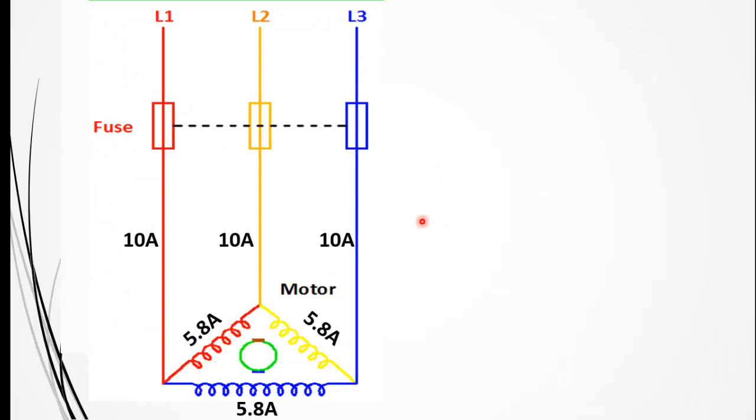First, I will explain what happens when single phasing occurs on a three-phase motor. Here you can see that during normal operation, all phases are carrying equal current. Since the motor is connected in the delta formation, the line currents are 10 amperes whereas the phase currents are 5.8 amperes. To see the relation between line and phase currents in delta and star networks, you can watch my video—the link appears on the top right side of your screen.